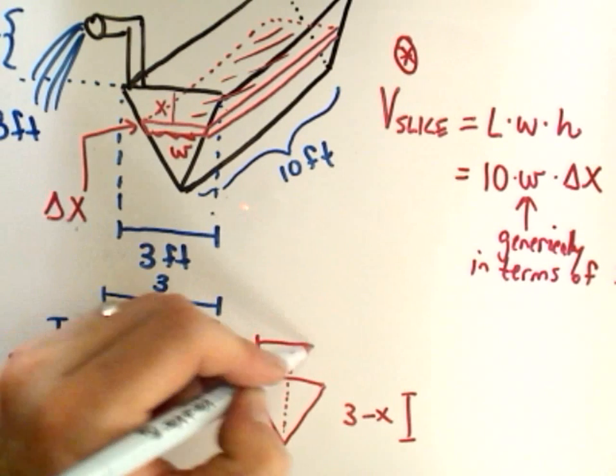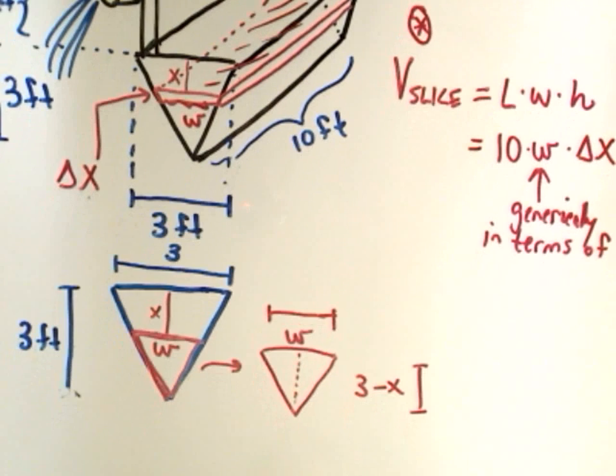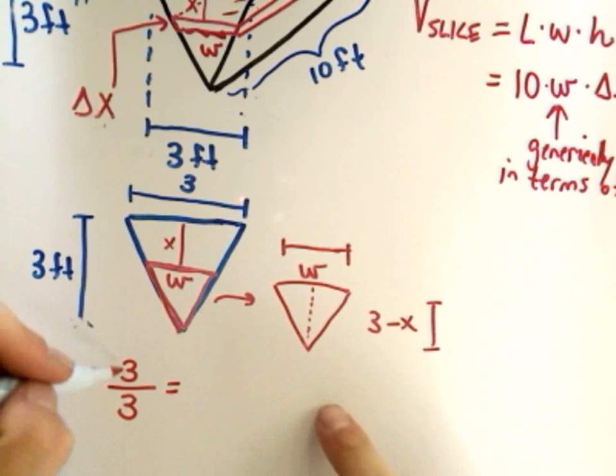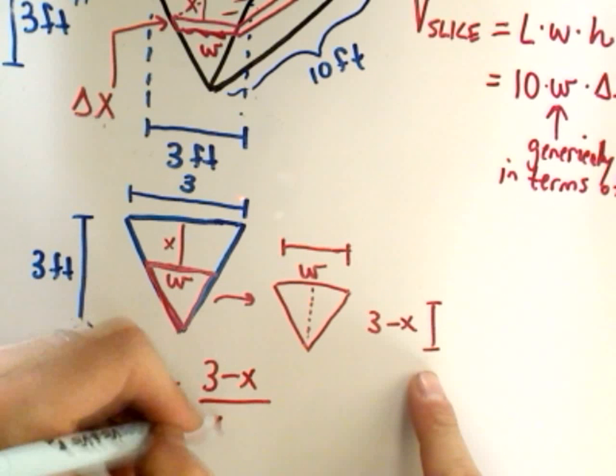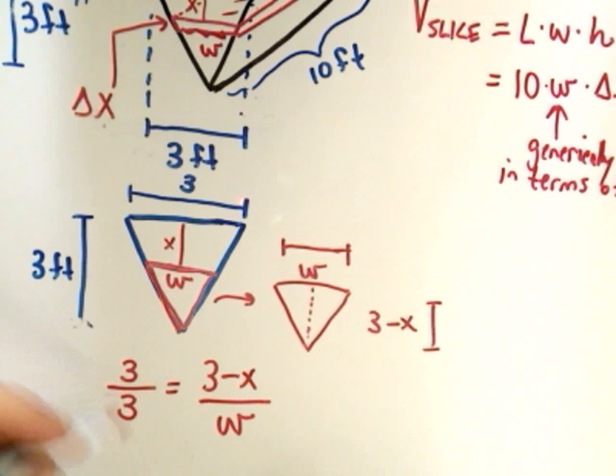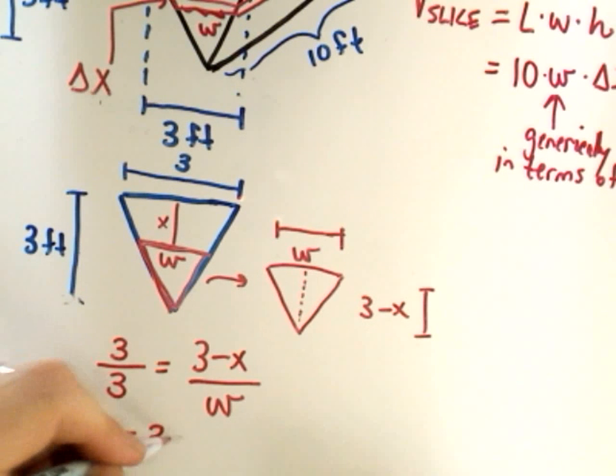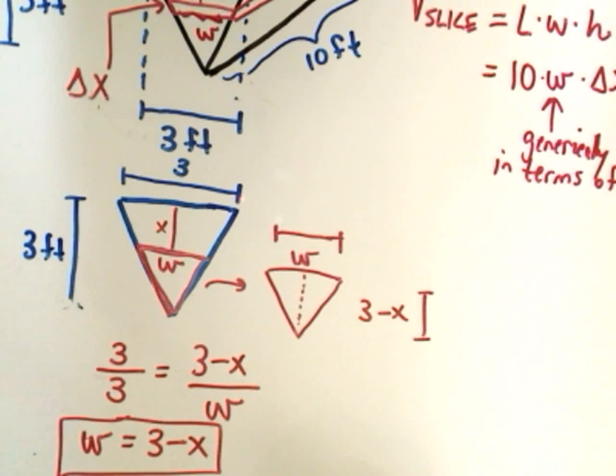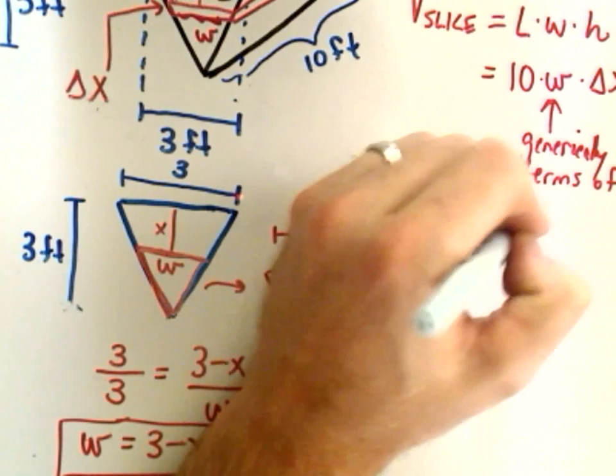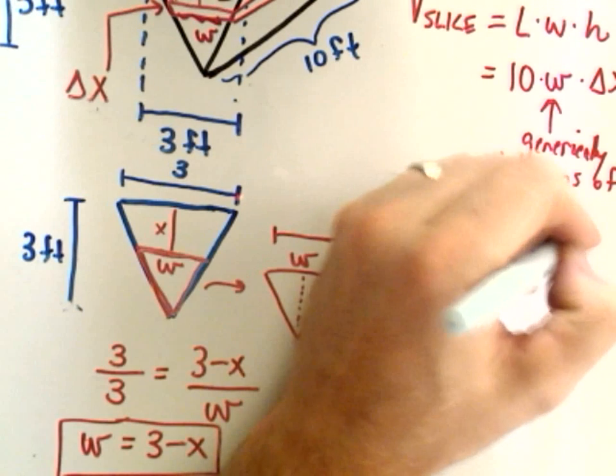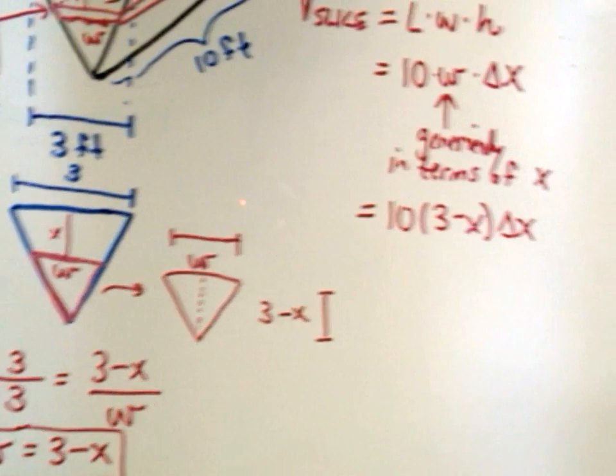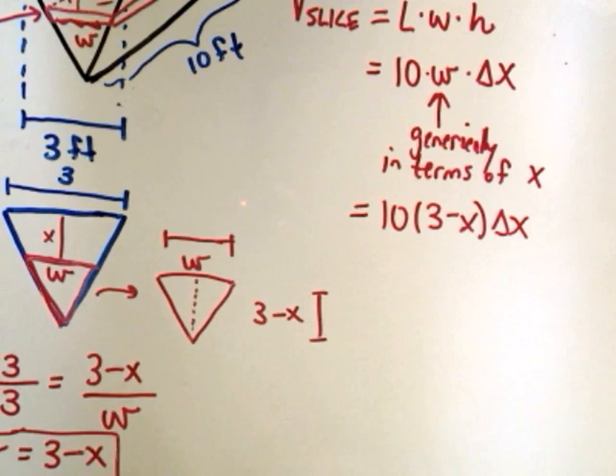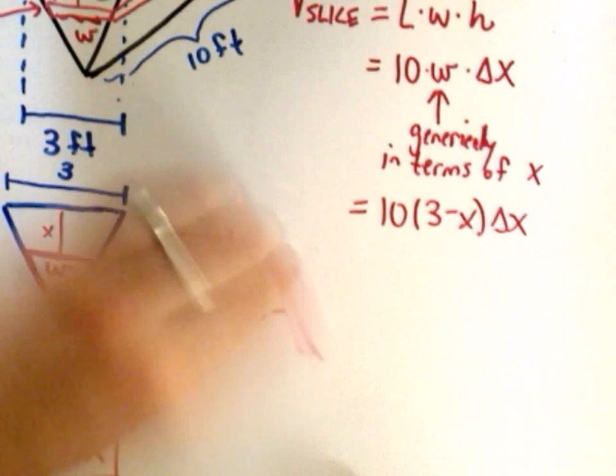Similar triangles says we take the height of the big triangle and the width of the big triangle. And we set that equal to height to width of the little triangle. So this is just 1. If you multiply, we'll get w equals 3 minus x. So this is nice. I've now expressed the width in terms of basically the depth down that I am. So the volume of the slice is 10 times the width, which is 3 minus x, times delta x. And that's usually the hard part to come up with. Not so miserable here, but sometimes it can be a little tricky.